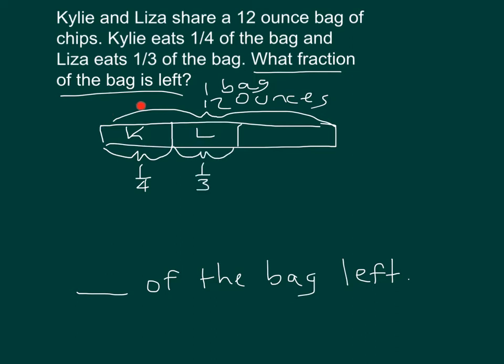The whole bag equals one, because we're talking about one whole bag. I know it equals 12 ounces; however, one is what we need for that fraction. So what we'll do is take the whole bag and subtract one fourth and subtract one third to figure out the fraction of the bag that is left.